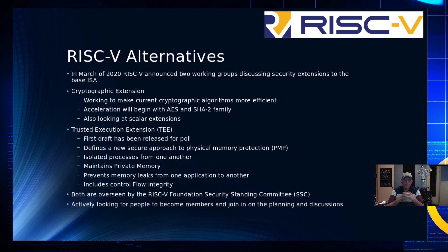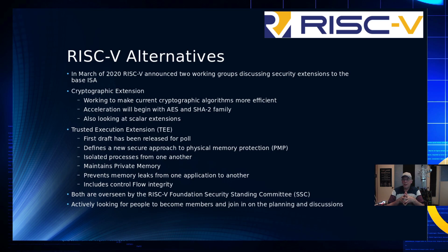They're also working on trusted execution extensions, or TEEs. TEE is a broad base — ARM calls one of theirs a TEE as well. But this really is the core formation of the security layers within the CPU, and it would form a root of trust. They have released their first draft for internal poll, not for public comment yet — just to confirm they have everything they think they need. If you are interested in participating, I'd really encourage you to join the RISC-V Foundation and get involved in one of these standing committees. If you're a security researcher, get involved in helping to define this.